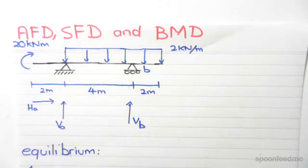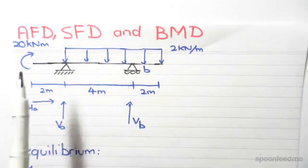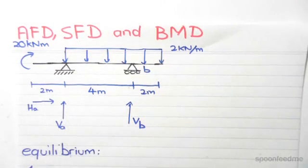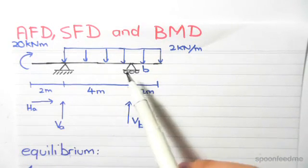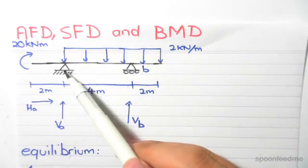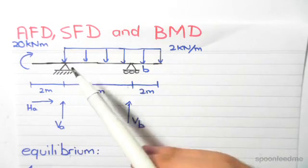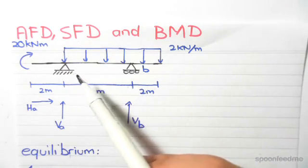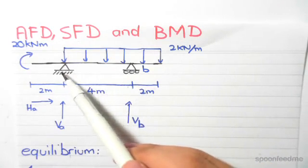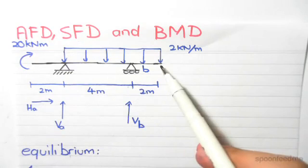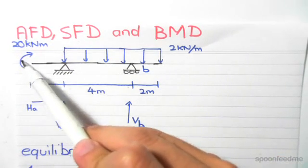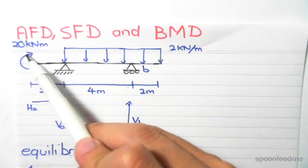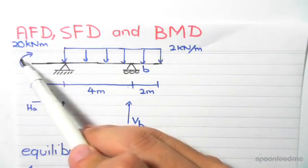This video presents example 5 of axial force, shear force and bending moment diagrams. As you can see, we have a two dimensional structure. We have a pin on the left hand side, a roller on the right hand side. We have a UDL extending from the pin all the way out to the right hand side. And we have a clockwise moment on the left hand side of 20kNm.